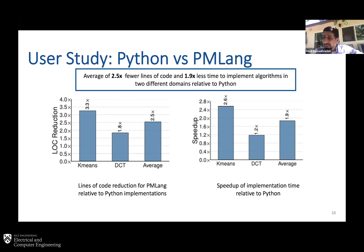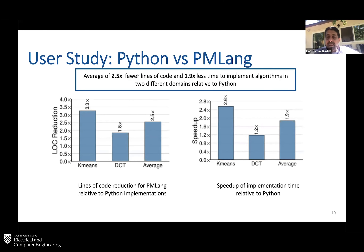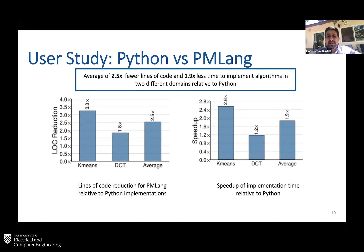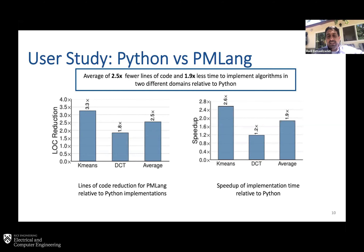We conducted a user study comparing Python versus PMLang. In terms of lines of code, giving participants practice problems and then asking them to implement k-means and DCT — intentionally showing things that are not deep learning — you still express them in the same language as deep learning. We see a 2.5x reduction in lines of code. A better proxy is development time, and on average we see a 2x reduction compared to Python. Python doesn't directly translate to accelerators, but we have the infrastructure that allows you to express that.